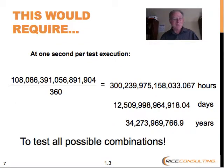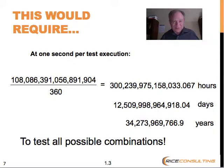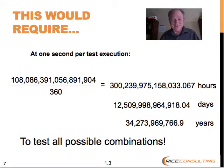Even with tools, you couldn't get the job done. If you did like one second per test execution, it'd work out to over 300 trillion hours, over 12 billion days, and over 34 billion years to test all possible combinations. At that point, we've reached like twice the estimated age of the universe by some scientists. And that's just testing once — that doesn't even include regression testing.